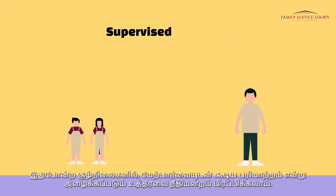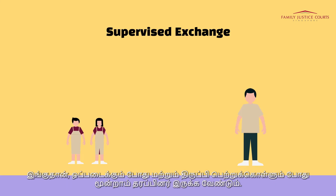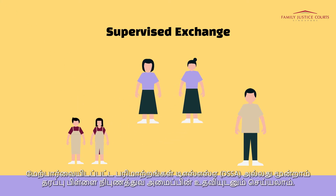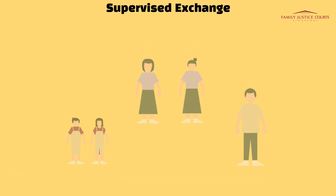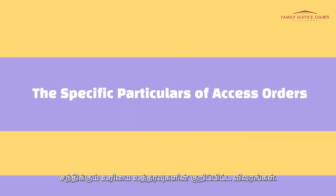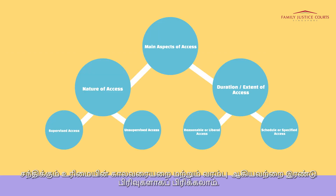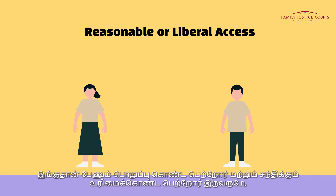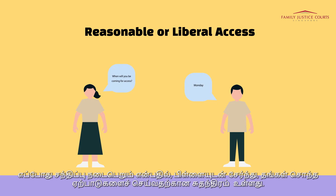Supervised exchanges can also be done via a DSSA or a third party child specialist facility. The specific particulars of access orders: the duration and extent of access can be broken down into two categories. The first category is reasonable or liberal access. This is where both the care parent and the access parent have the liberty to make their own arrangements together with the child on when access would take place. This requires a reasonable degree of flexibility and cooperation between both parents to make such access work.